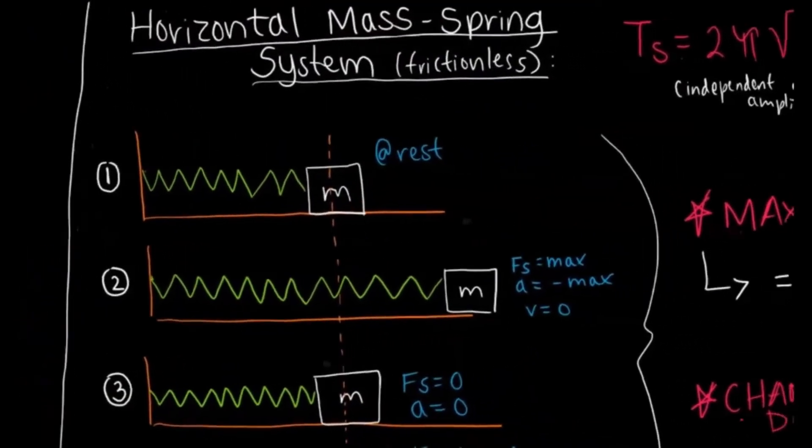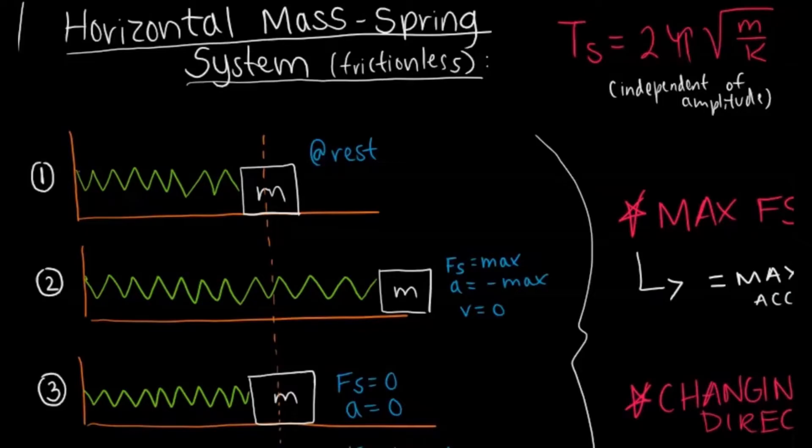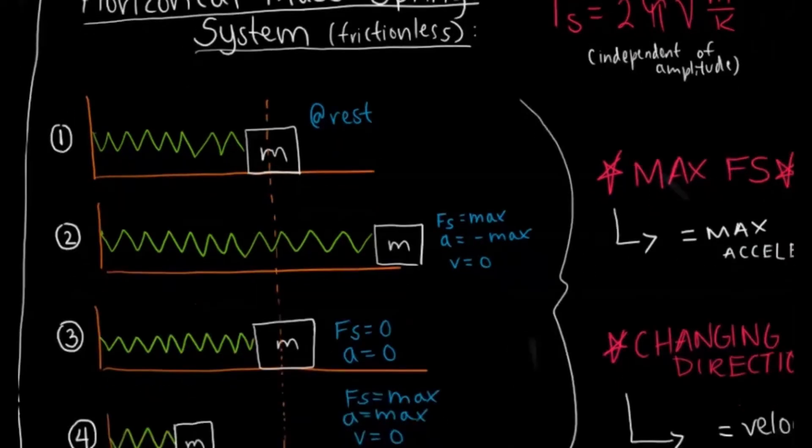Next, let's talk about the horizontal mass spring system. So this is frictionless. The equation for a spring is just 2π times square root of mass over the spring constant. It is also independent of the amplitude.